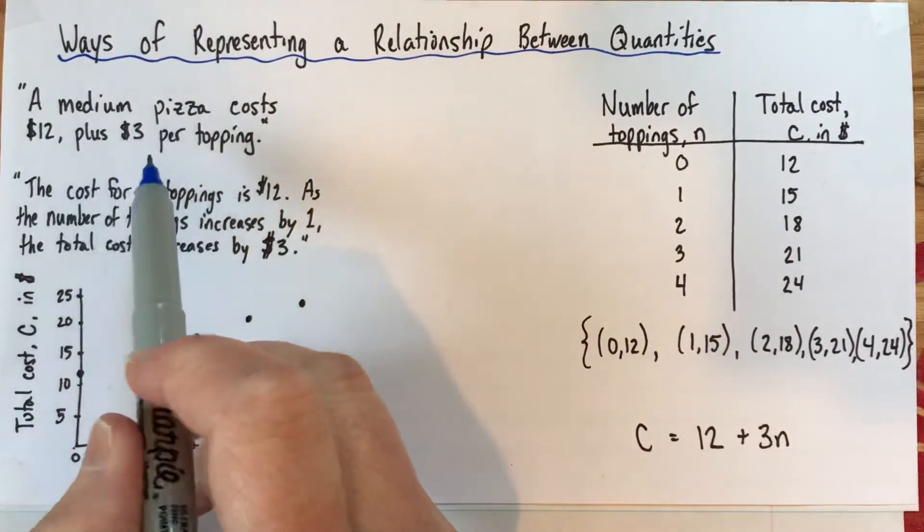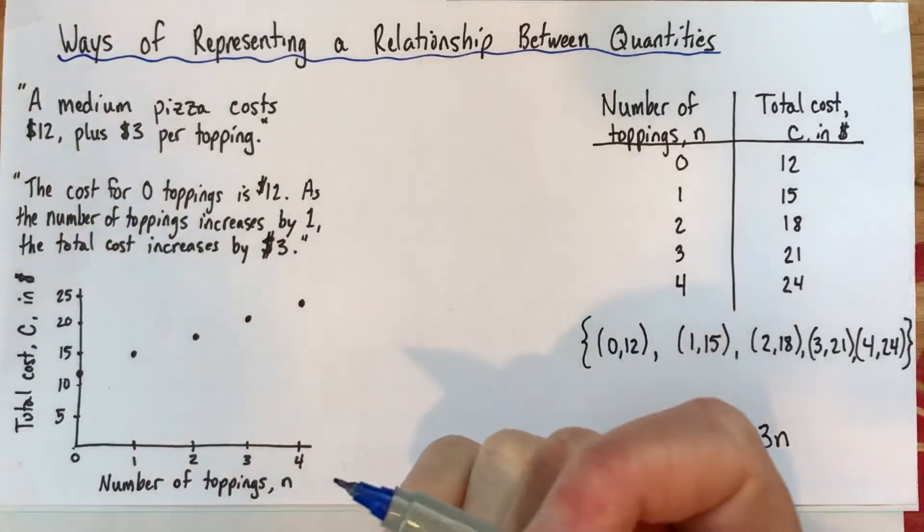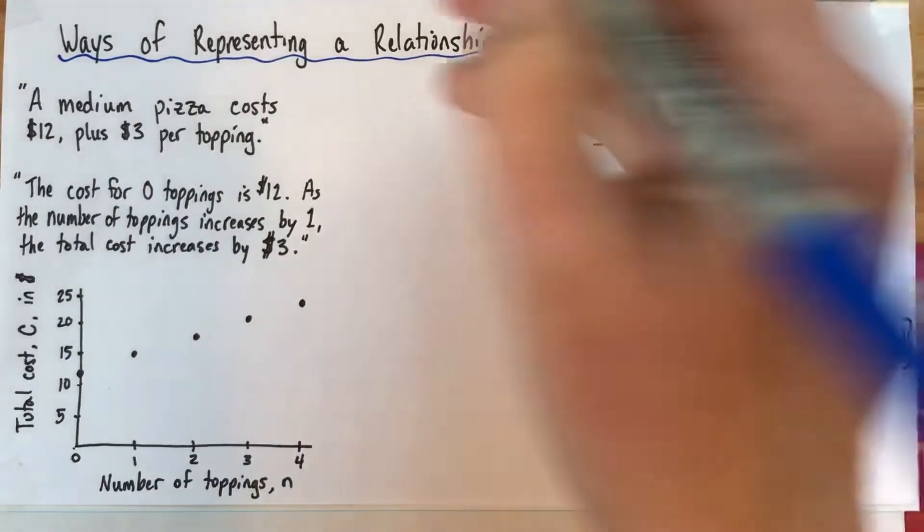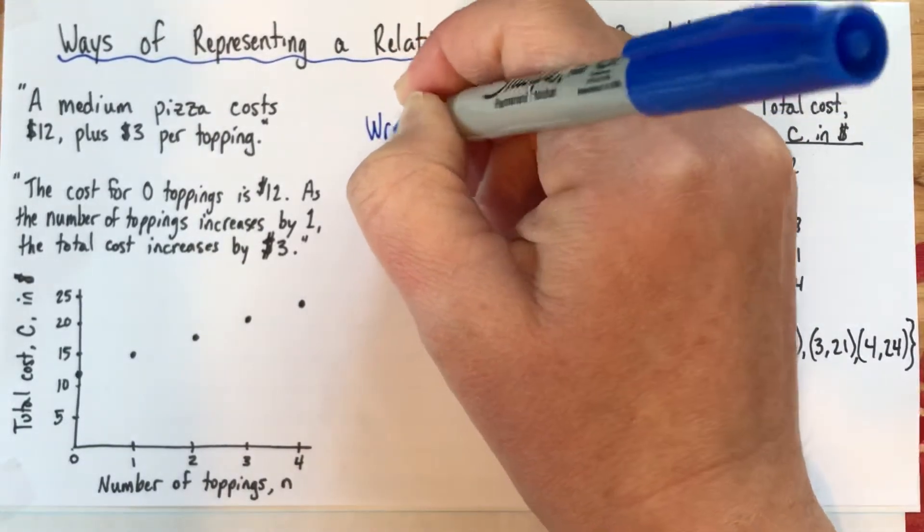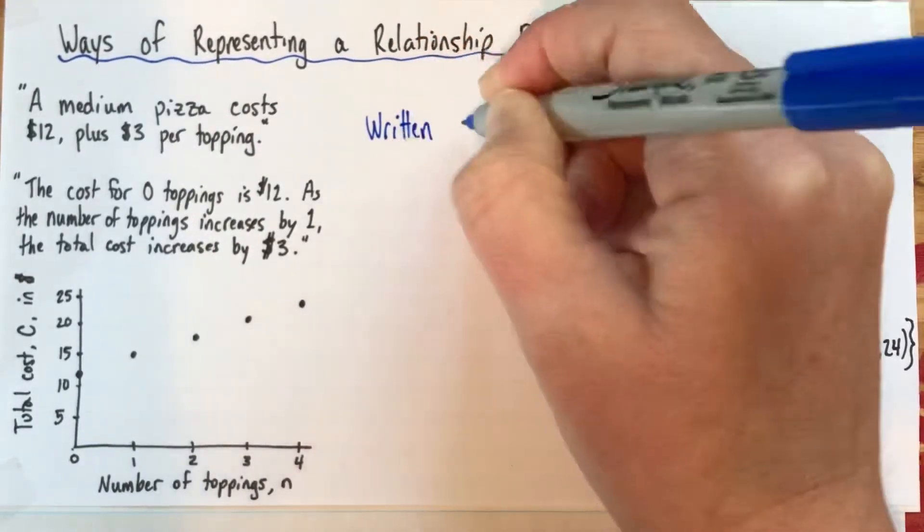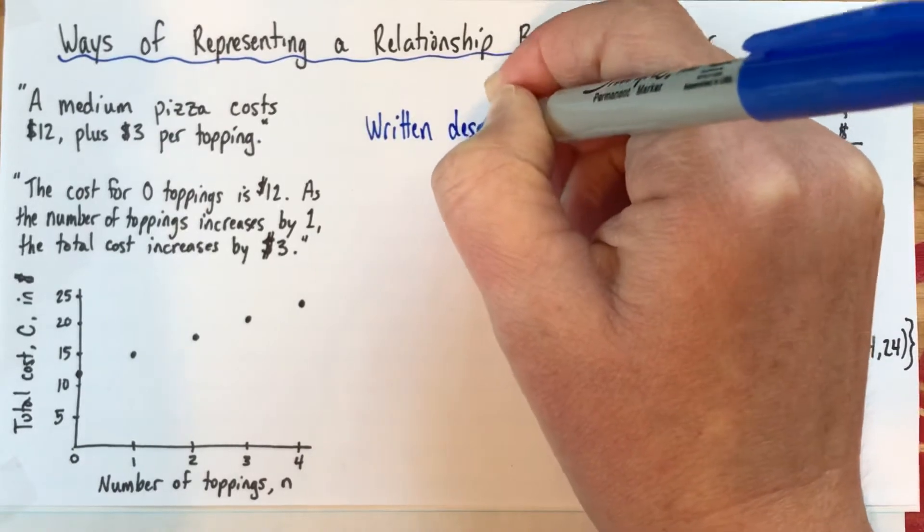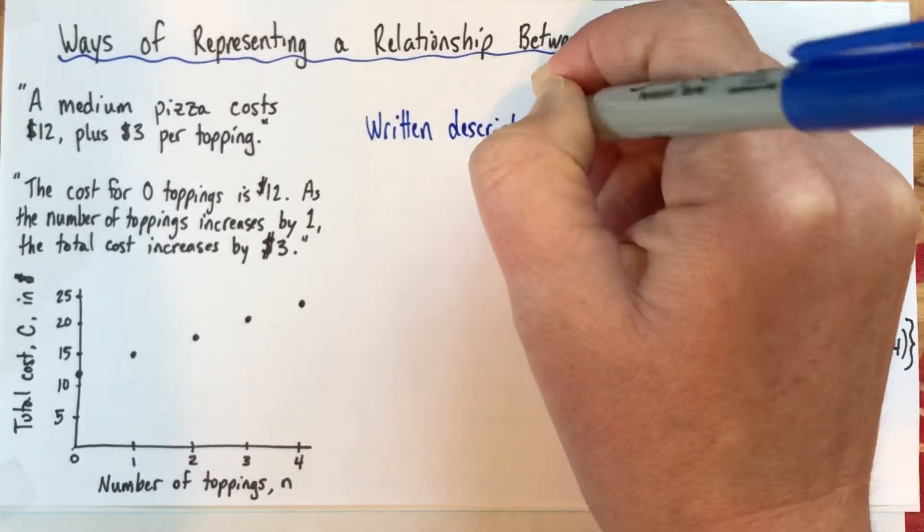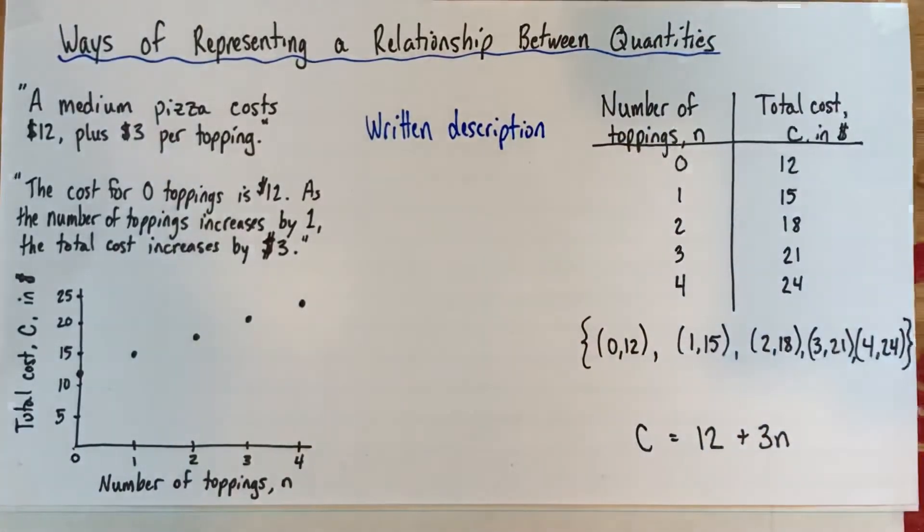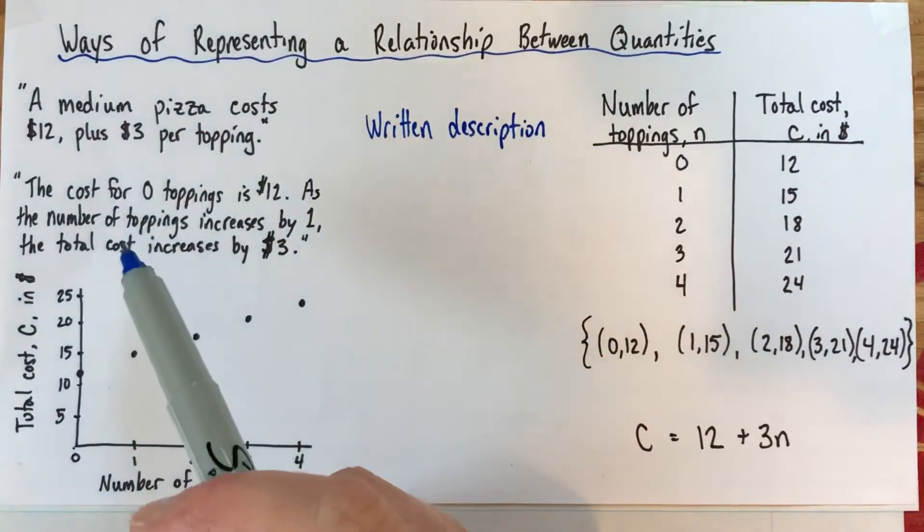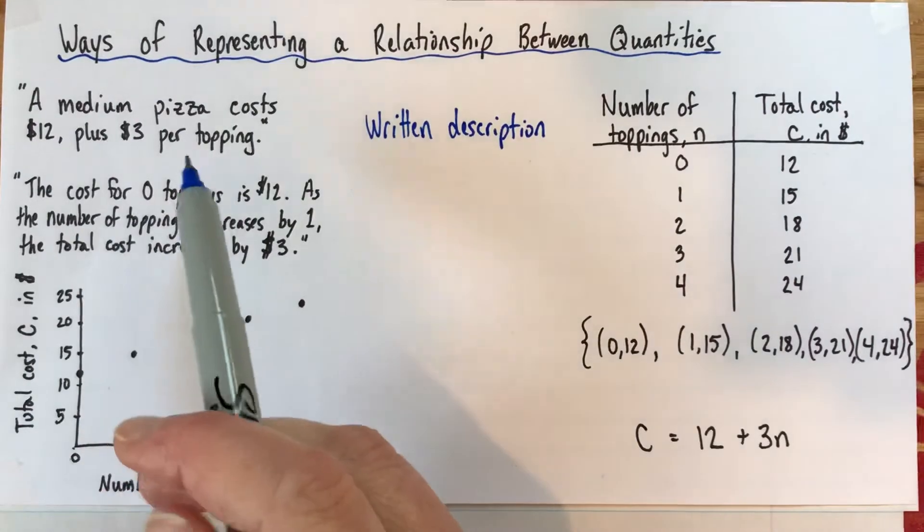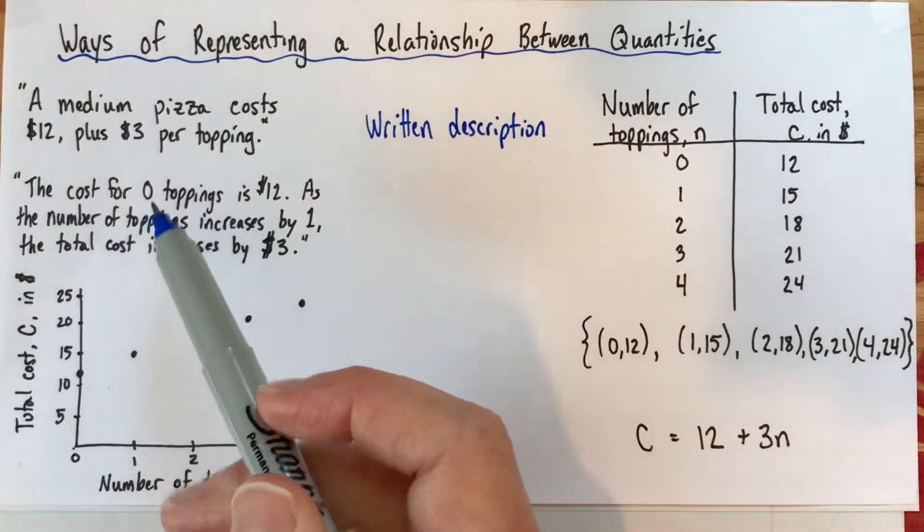A medium pizza costs $12 plus $3 per topping. So this is just I'd say a written description of the relationship. Written description and I actually gave two examples of written descriptions because I thought they looked pretty different from each other and they both have value, they sort of emphasize different things.